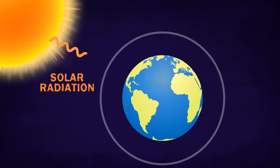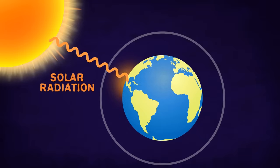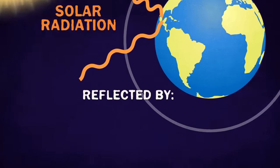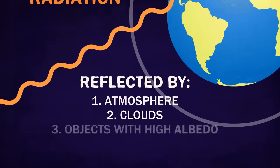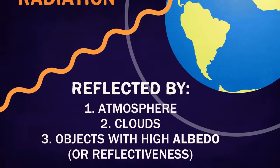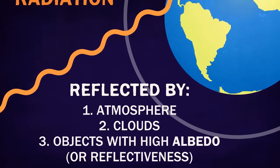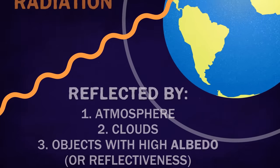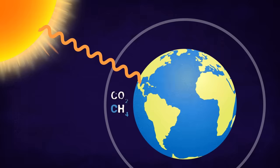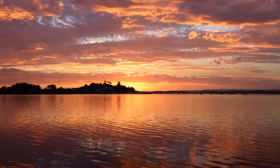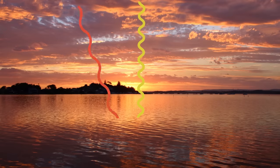Incoming solar radiation — heat energy from the sun — heads toward the Earth. A lot of this energy is absorbed by the ground, water, and trees, warming everything up. Some of it is reflected by the atmosphere and clouds, or other objects at the surface with high albedo or reflectiveness, like glaciers, and heads back out into space. Things really start to warm up where greenhouse gases get involved: when an object like a road or a lake absorbs all that heat from the sun and starts to give off heat of its own.